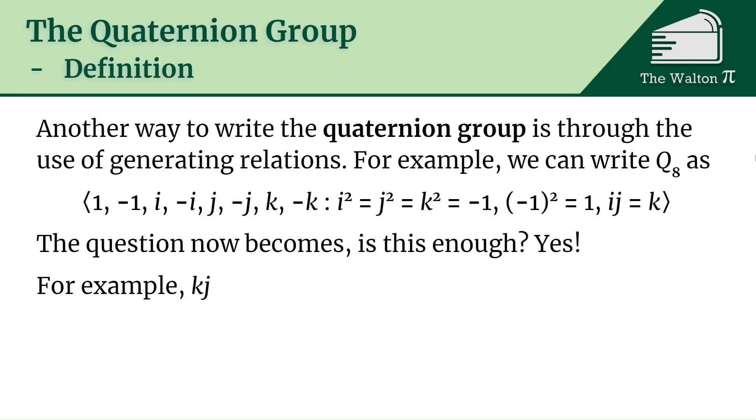So for example, let's look at what is k times j. Well, k, that is just i times j, so we can get i times j times j. So that's i times j squared, which is i times negative 1, which is negative i. So that gives us that multiplication, and it turns out that any other multiplication you look at, you can calculate out using these rules.